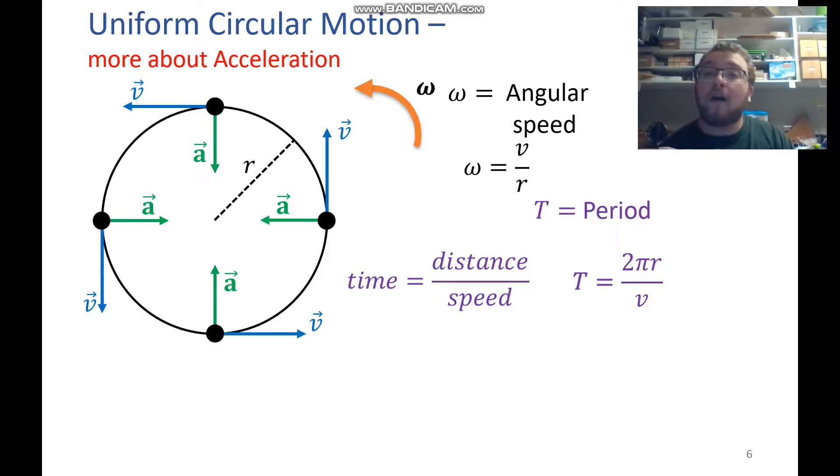Now we say that the distance is 2πr because it's traveling one circumference of the circle. And that is the formula for circumference of a circle, π times the diameter, or 2πr. So because we know that v divided by r is omega, here we have r over v. So that's 1 over omega. So we can rearrange that to say that the period is 2π divided by omega, or 2π divided by the angular speed.